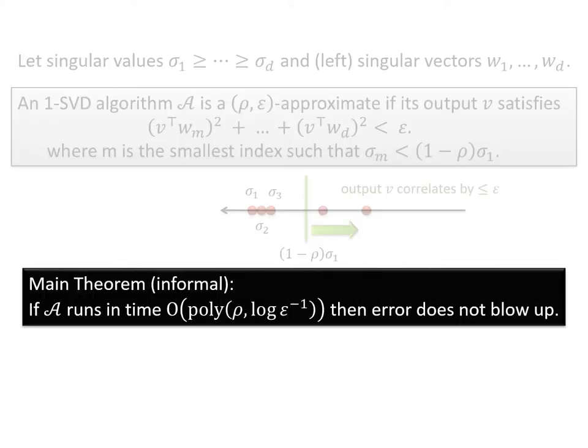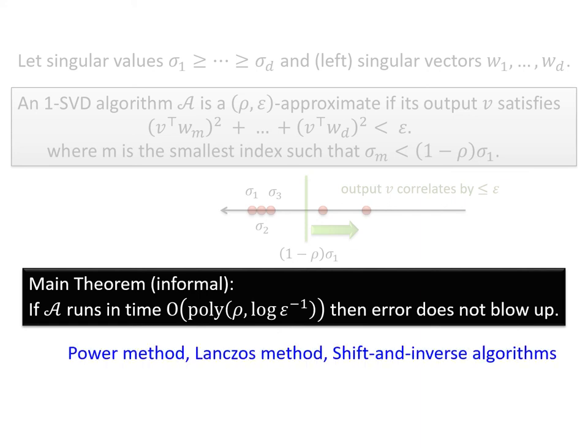Now, our main theorem in the paper essentially says the following. As long as this algorithm A runs in a time that is only poly logarithmic with respect to 1/ε, then error doesn't blow up. For instance, power method, Lanczos method, shift and inverse, essentially everything you may come up in your mind at this point, does fall into this category. For instance, Lanczos method has the following running time that indeed has a log dependence on 1/(ρε).